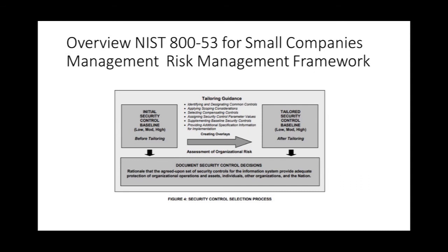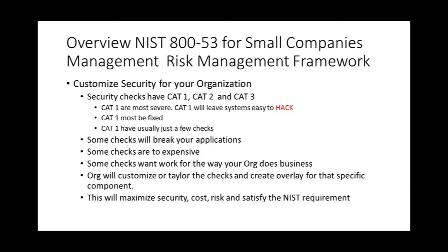Why did you not put some of those controls on? Why did you enhance some of those controls? It talks about customizing security for your organization. The STIG check actually has security checks that have CAT 1, CAT 2, and CAT 3. CAT 1s are the most severe — they will leave your system easy to hack and must be fixed in a timely manner. Some checks will actually break your application, some are too expensive, and some won't work for your org because of the way you do business. That's why we need to customize those checks and create an overlay specifically for that component in your business. This will maximize security, manage cost and risk, and satisfy your NIST requirements.